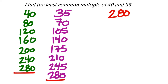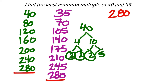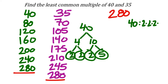Now let's try prime factorization. For 40, I'll use a factor tree. Split 40 into 4 and 10 — neither is prime, so continue: 4 splits into 2 and 2, and 10 splits into 2 and 5. All of those are prime. So 40 has the prime factorization 2 × 2 × 2 × 5.